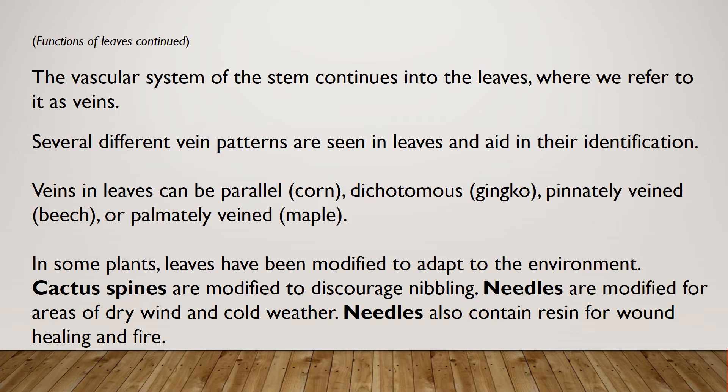In some plants, leaves have been modified to adapt to the environment. Cactus spines are modified to discourage nibbling. Needles are modified for areas of dry wind and cold weather, and needles also contain resin for wound healing and fire resistance.